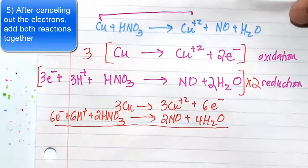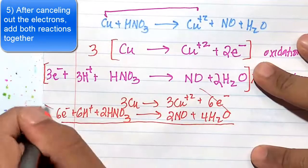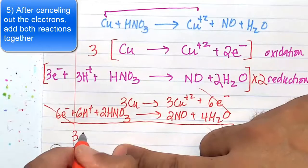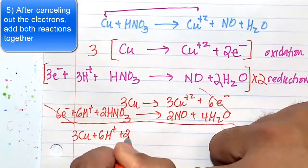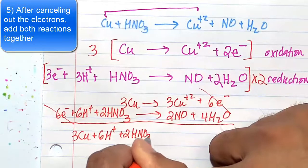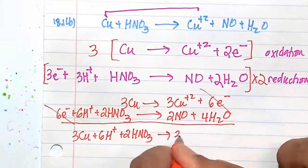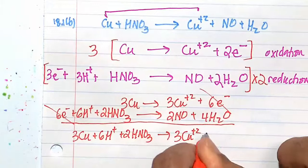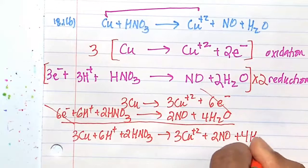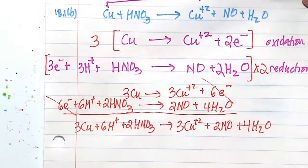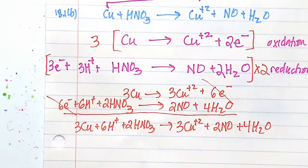Remember, this is an acidic medium. The 6 electrons and 6 electrons cancel. So we're left with 3Cu plus 6H⁺ plus 2 nitric acid, and that's going to go to 3Cu²⁺ plus 2NO plus 4H₂O. And that is our balanced chemical equation in the medium of acid.